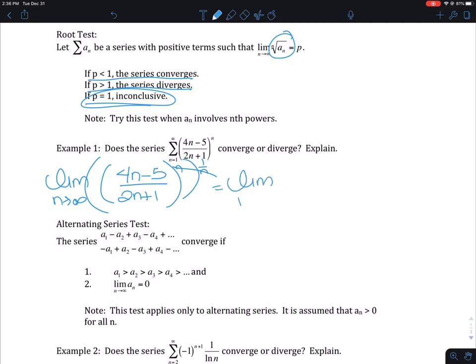So then I'm left with the limit as n approaches infinity of (4n-5)/(2n+1), and I take my ratio here, which is 4/2, so I get 2.